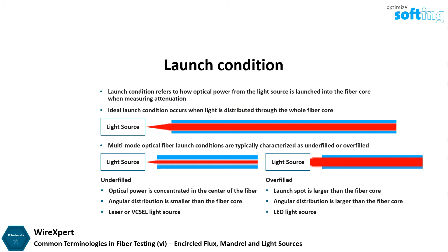The type of light source affects attenuation measurements. An underfilled fiber measures a lower attenuation value, and an overfilled fiber measures a higher attenuation value.